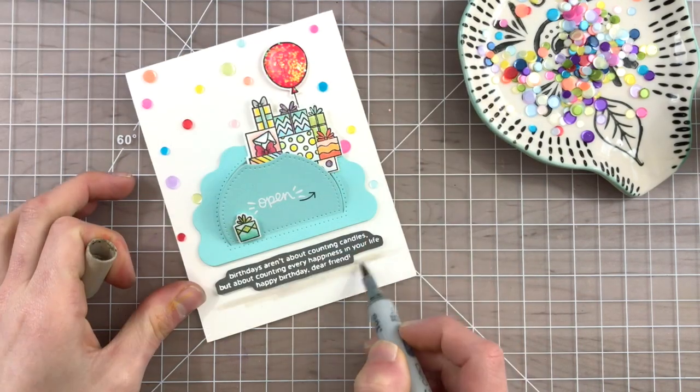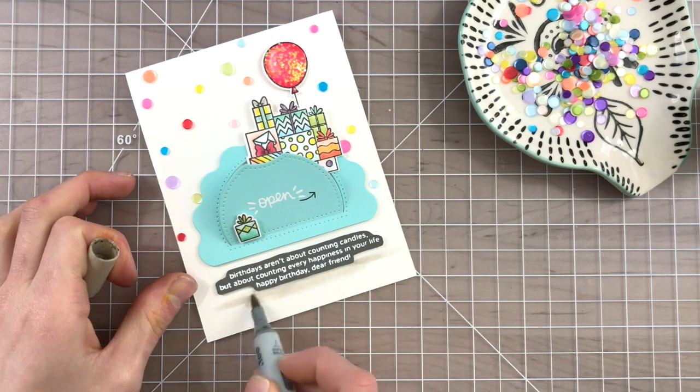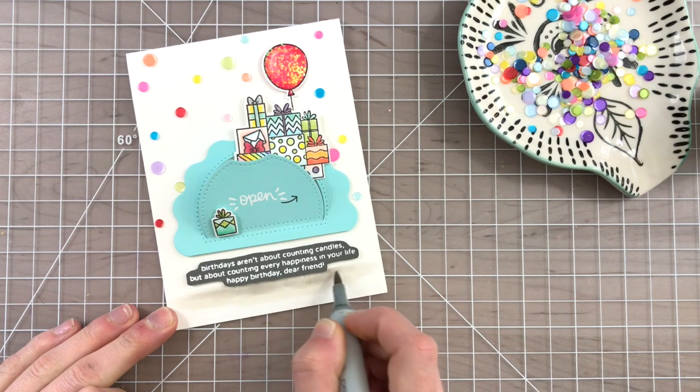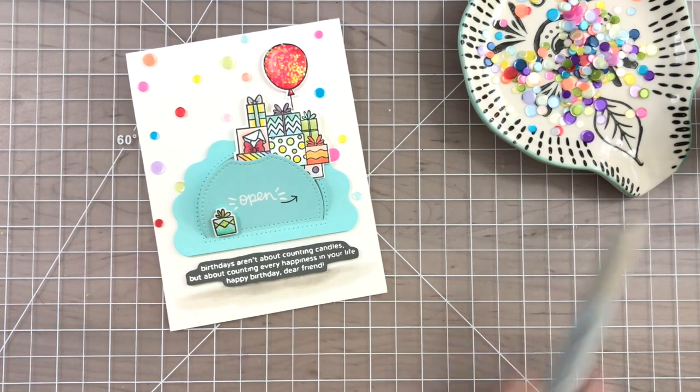I did ground my sentiment a little bit to create some grounding elements for the bottom portion of the card using a couple of warm gray markers. I used warm gray 3, 1, and 00.